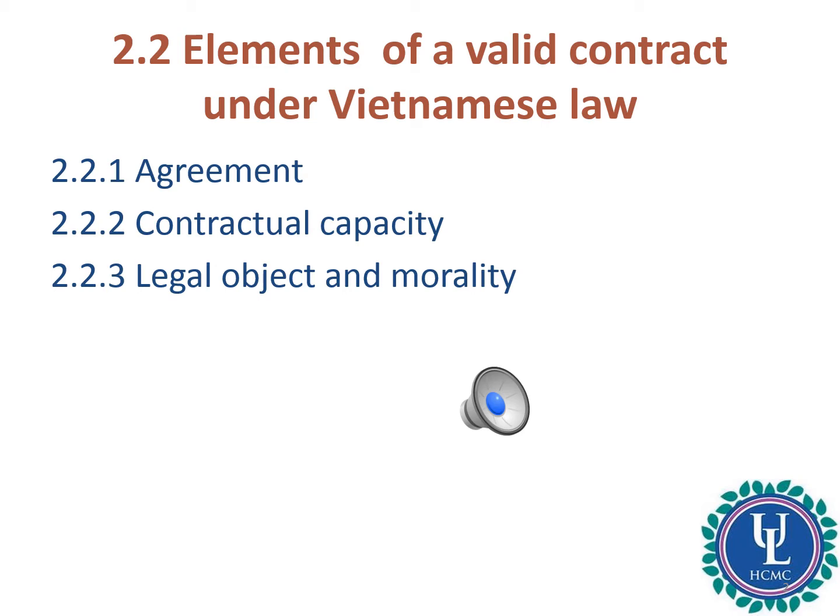In the previous part, we already looked at Essential Elements of a Valid Contract under U.S. Law, and you already know that there are four essential elements under U.S. Law. To remind, they are agreement, consideration, contractual capacity, and legality.